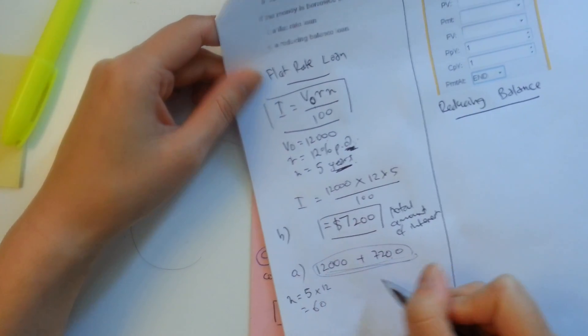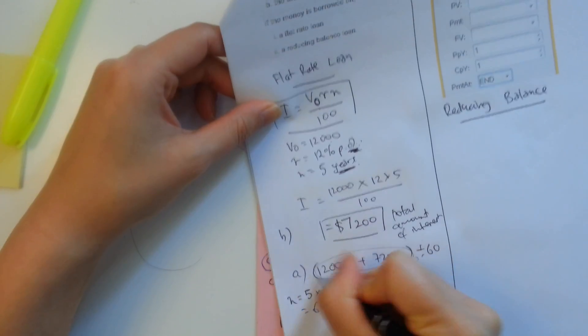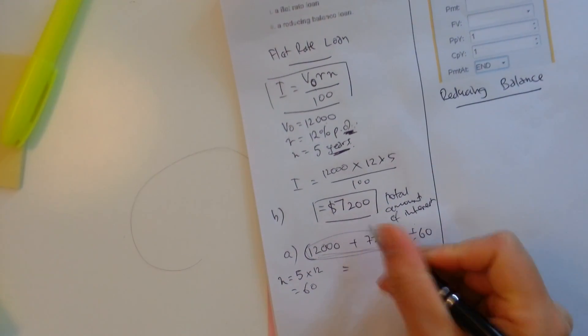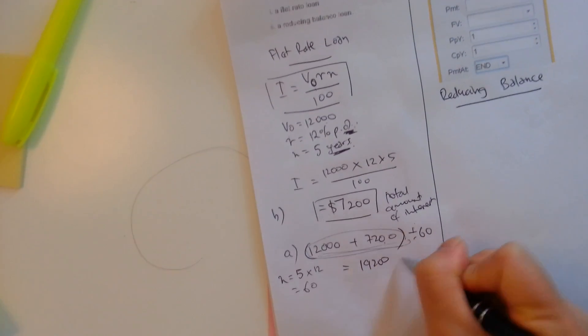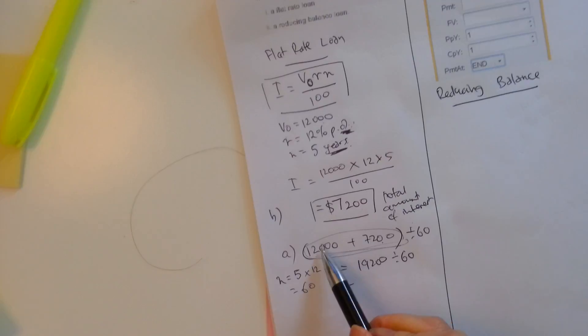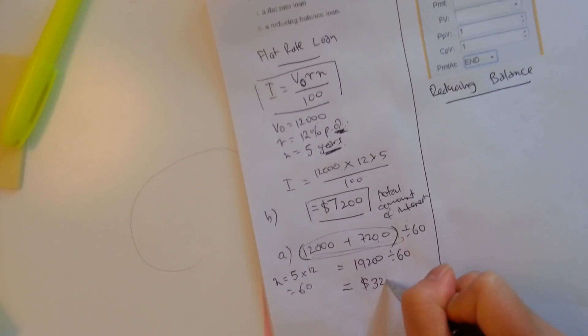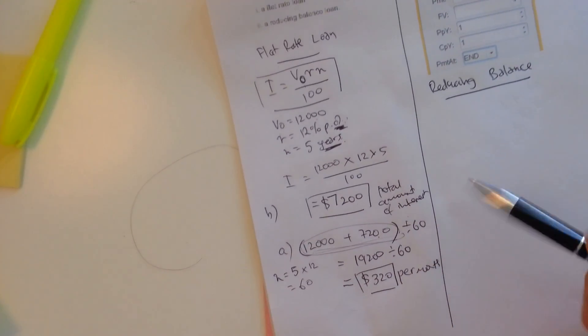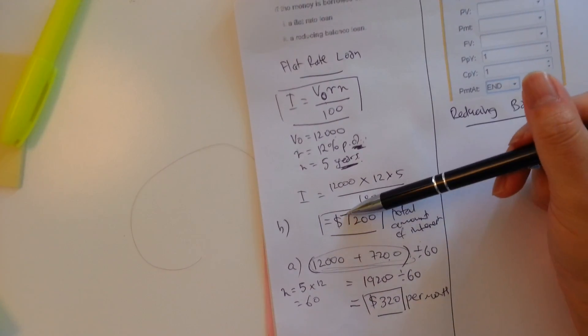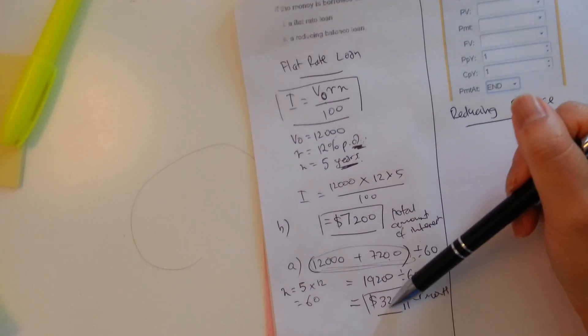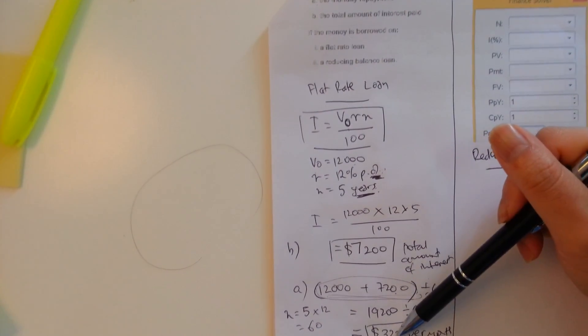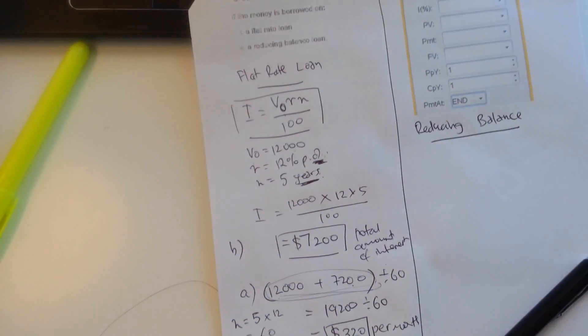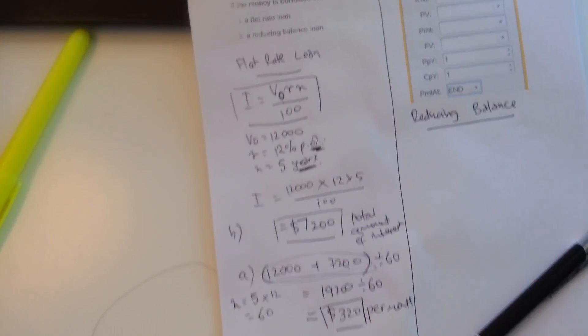We're going to pay this off, this amount, over 60 payments. So all you need to do is add them together and then divide it by 60, which should give you $19,200 divided by 60. So don't just enter this into the calculator; put a bracket around it because we want the calculator to calculate that first. And then it should be equivalent to $320 per month. So that's A done. So under this condition, flat rate loan, we're going to pay a total of $7,200 interest. And each month, every month for five years, we're going to be paying back $320 per month.